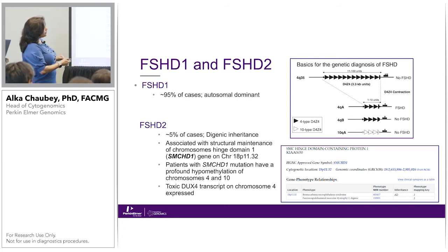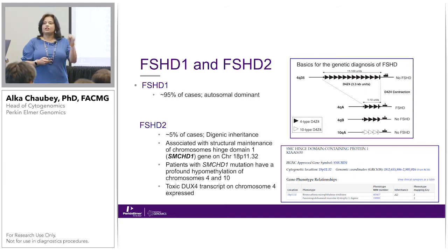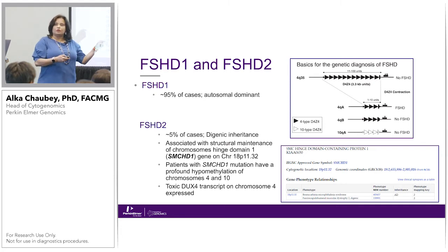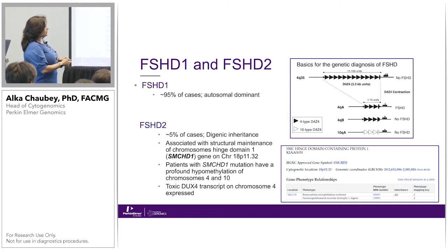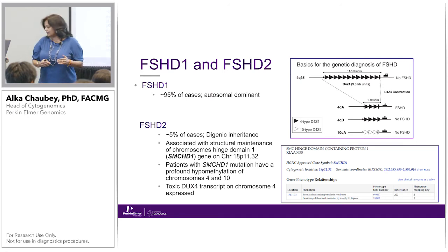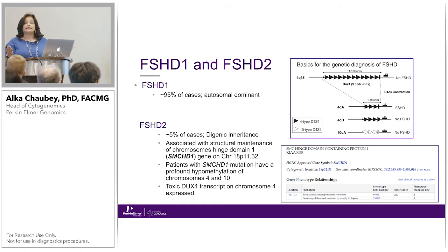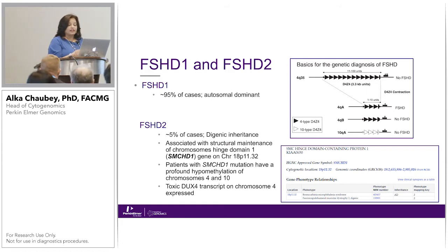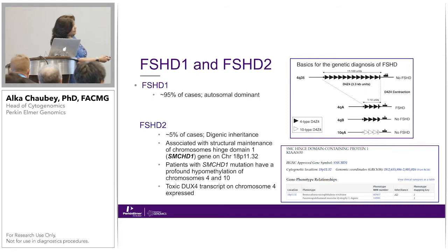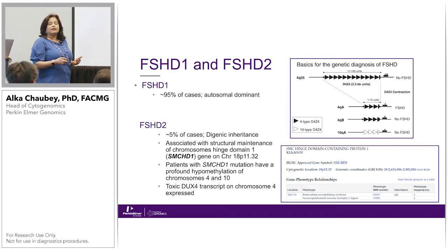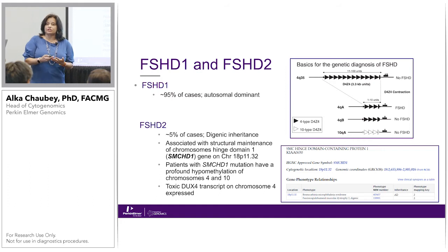If you have the 4QA polymorphism along with the repeat contraction, you will have FSHD. However, if you have a contraction on the 4QB polymorphism, you will not have FSHD. This is compounded by the fact that chromosome 10 also has these D4Z4 repeats, so we need to differentiate chromosome 4 from chromosome 10 alleles — and that's where it becomes really difficult by next-generation sequencing.